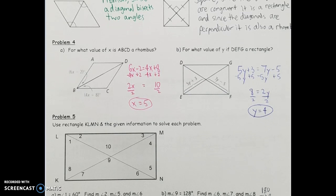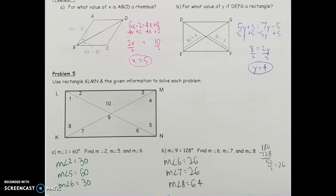Now using rectangle KLMN to solve for missing angles. If angle 1 is 60 degrees, angle 2 is 30 because the corner is a right angle: 90 minus 60 equals 30. Angle 5 is alternate interior to angle 1, so angle 5 is also 60. Angle 6 can be found as alternate interior to angle 2, giving 30 degrees — or using the right angle in that corner: 90 minus 60 equals 30 for angle 6 as well.